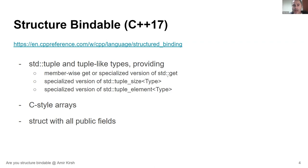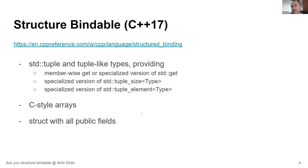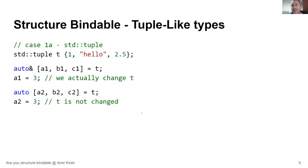The type should have tuple_size specialized and tuple_element as well. Any type that has these three — which includes standard library types like std::array and std::pair — qualifies. Then C-style arrays are also part of the structure-bindable types, and any struct with all public fields. Let's take a few examples to make sure we see who is structure-bindable.